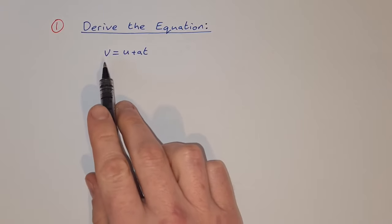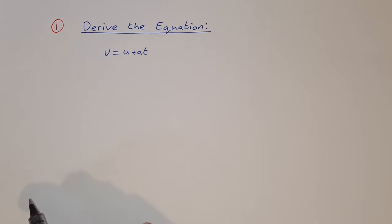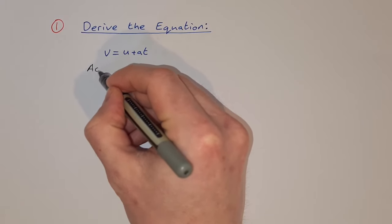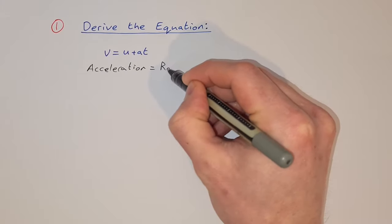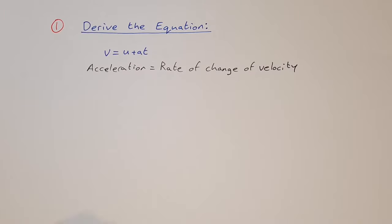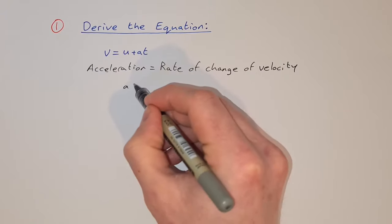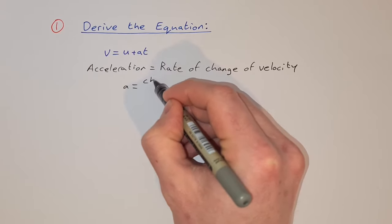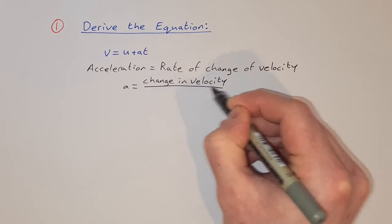We're asked to derive the equation v = u + at. To derive this one, we start with the fact that acceleration is equal to the rate of change of velocity. So acceleration, which we can call a, is equal to the change in velocity divided by time.